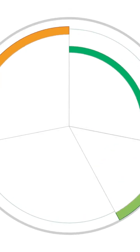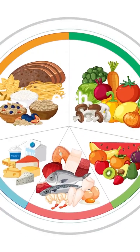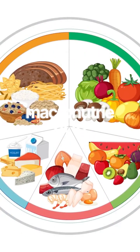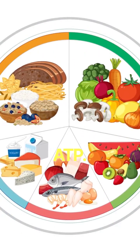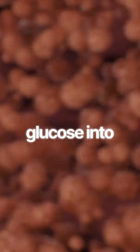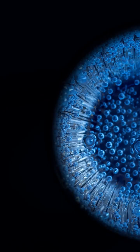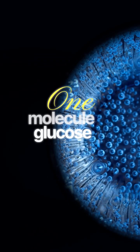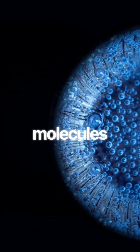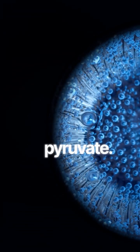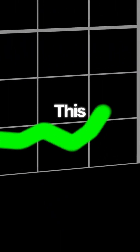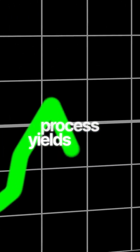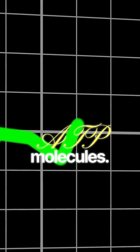Let's trace the catabolic journey of each macronutrient to become ATP. The goal is to turn glucose into ATP. One molecule of glucose is broken down into two molecules of pyruvate, yielding a small net gain of two ATP molecules.